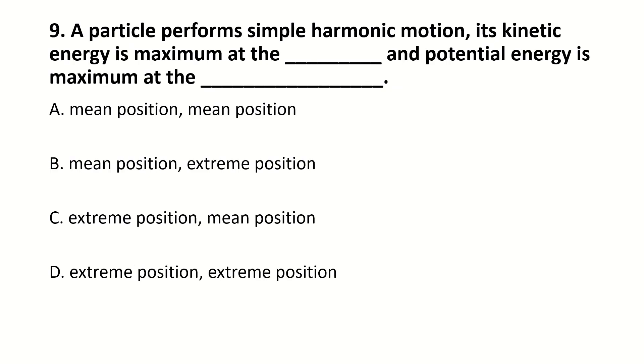A particle performs simple harmonic motion. Its kinetic energy is maximum at dashed and potential energy is maximum at dashed. Right answer is B: Kinetic energy is maximum at mean position and potential energy is maximum at extreme position.